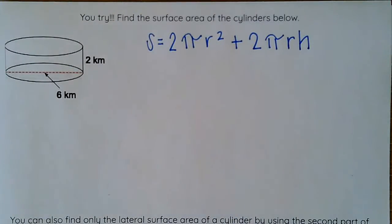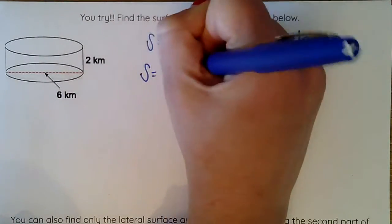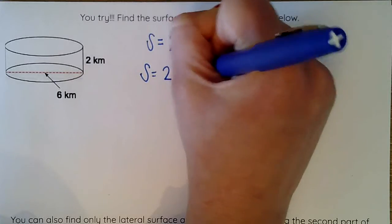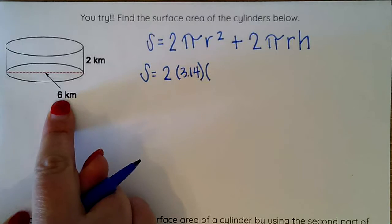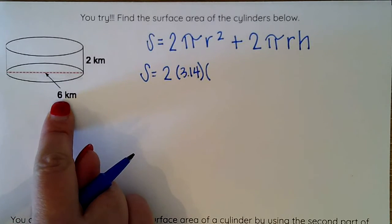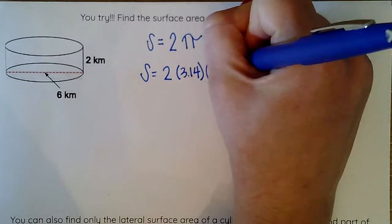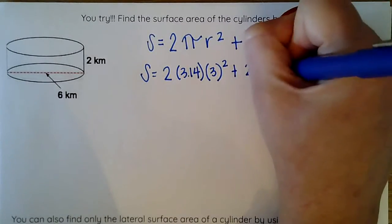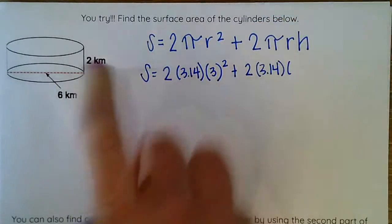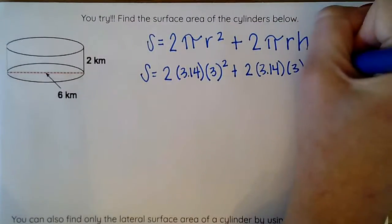Now I go ahead and substitute in: surface area equals 2 times, again plugging in 3.14 instead of π, times my radius. This is my diameter, and I know to get my radius I need to divide my diameter in half. So my radius here is going to be 3 squared, plus again 2 times 3.14. Keep my same radius. My radius won't change, and then my height here is 2.